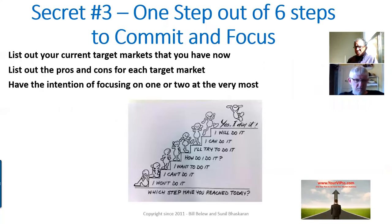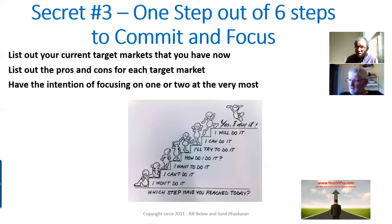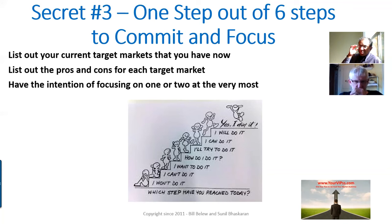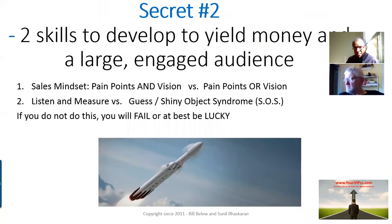Focusing on one target market is one step out of six we have in our program. What we suggest is: list out your current target markets, then list the pros and cons for each. Market A may be large but nobody's buying. The intention is to start focusing on one or two markets at the very most. One of the best pieces of advice I ever got from a very successful Silicon Valley entrepreneur was: learn how to focus and have one market preferably to work on. Best piece of advice I ever got.